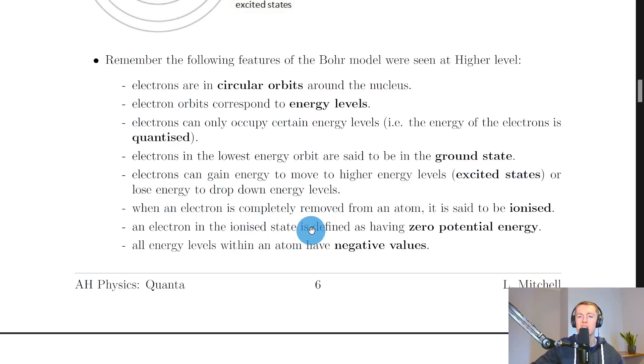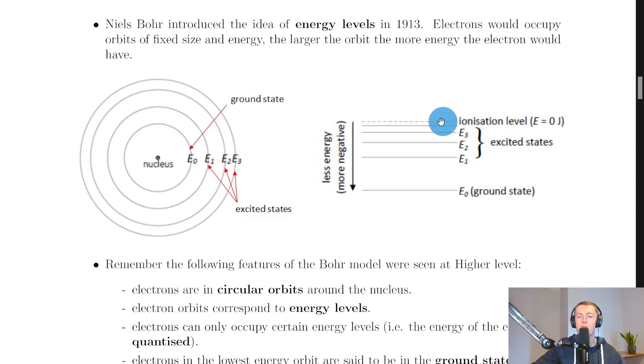And when an electron is completely removed from an atom it is said to be ionized. An electron in the ionized state is defined as having zero potential energy and all energy levels within an atom have negative values. And they have negative values because of this second last statement here. Because we say that the ionization level at the top is defined as being at zero joules and anything below that must be a negative value.